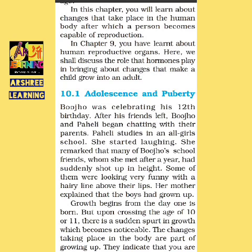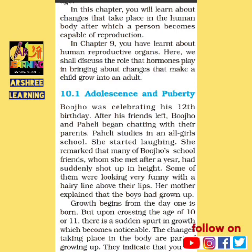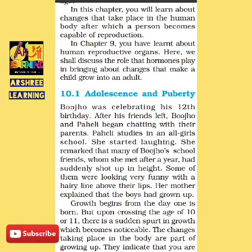In this chapter, you will learn about changes that take place in the human body after which a person becomes capable of reproduction. In Chapter 9 we learned about human reproductive organs. In this chapter, we will study that when the human body and its reproductive organs develop, what changes take place due to the hormones which develop in the body. These two terms — adolescence and puberty — are used to describe a growing up organism.